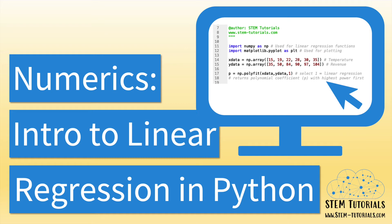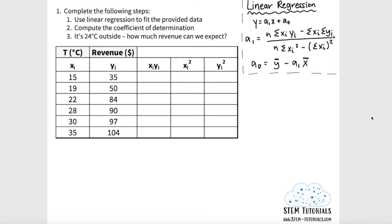Welcome to another STEM tutorial. In today's video we'll show you how you can solve for the equation of a linear regression line using Python. We'll be focusing on the following example here which we had solved by hand in our linear regression practice problem tutorial. We need to solve for the linear regression line that best describes the data shown — specifically how ice cream sales (y) increase with temperature (x). You'll likely never solve for a linear regression line by hand in the workplace; it's much faster to use a program such as Excel, MATLAB, or Python.